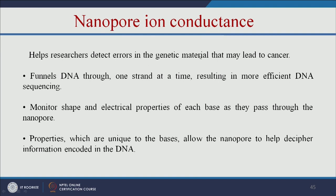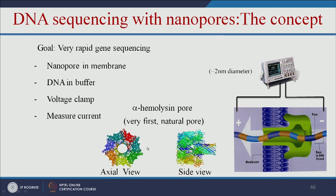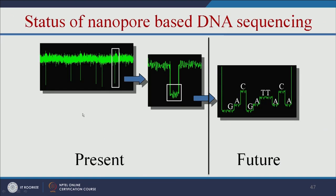Let us see how nanopore ion conductance can be used for DNA sequencing. This helps researchers detect errors in genetic material that may lead to cancer. DNA is passed through small pores, similar to DNA sequencing. A protein called alpha-hemolysin can be used, but it is toxic. Carbon nanotubes can serve as non-toxic alternatives for this application. When single-stranded DNA passes through a carbon nanotube, there is a decay in current. Future researchers aim to develop specific sensors where different nucleotides (G, A, C) produce distinct current decay signatures, enabling low-cost DNA sequencing.